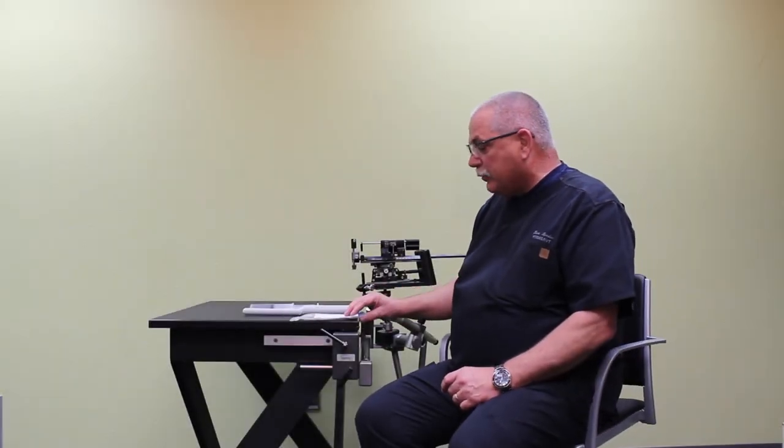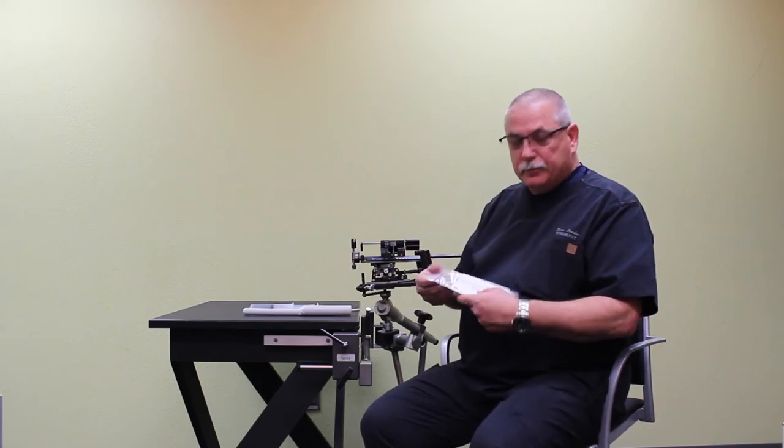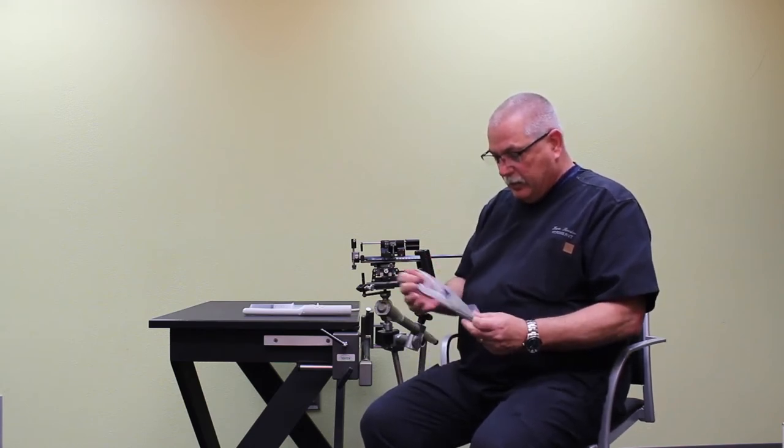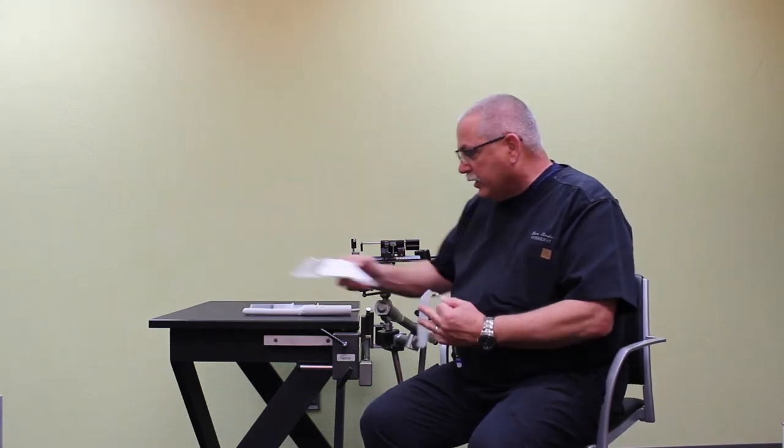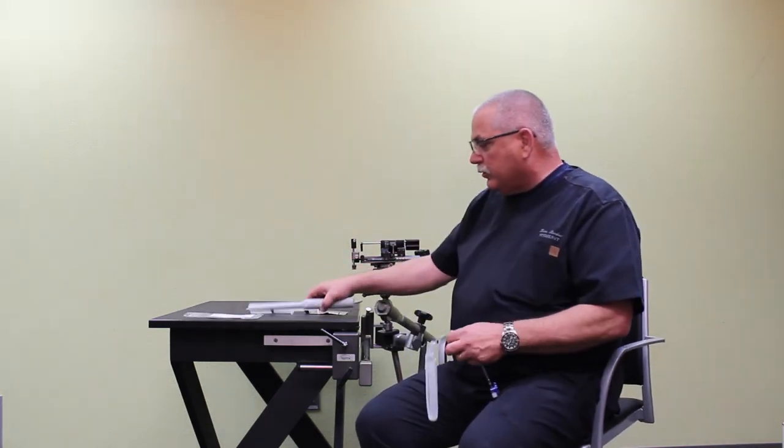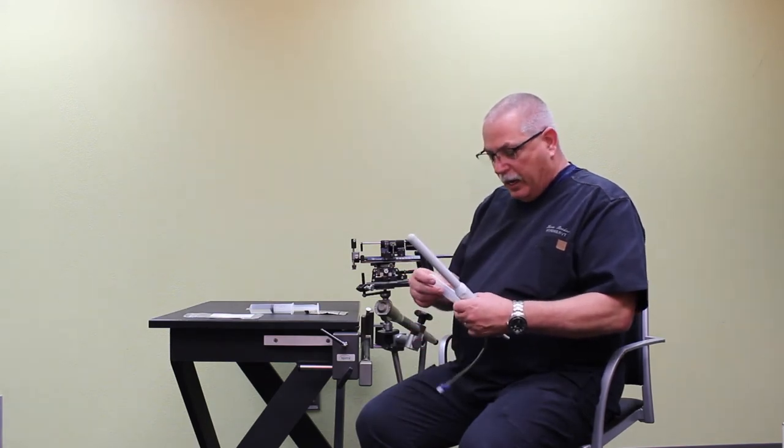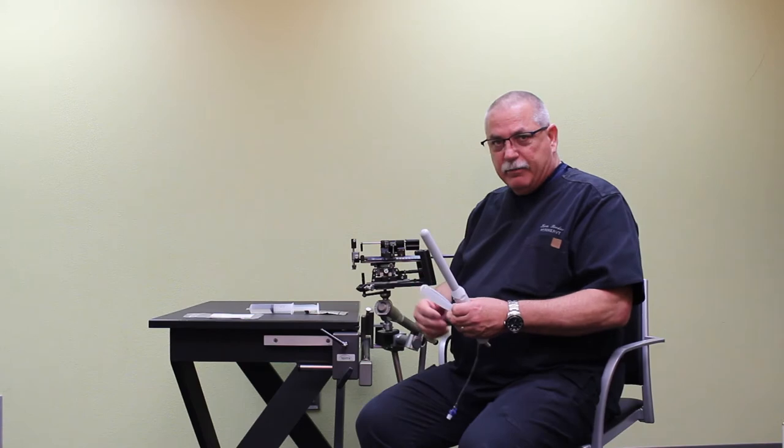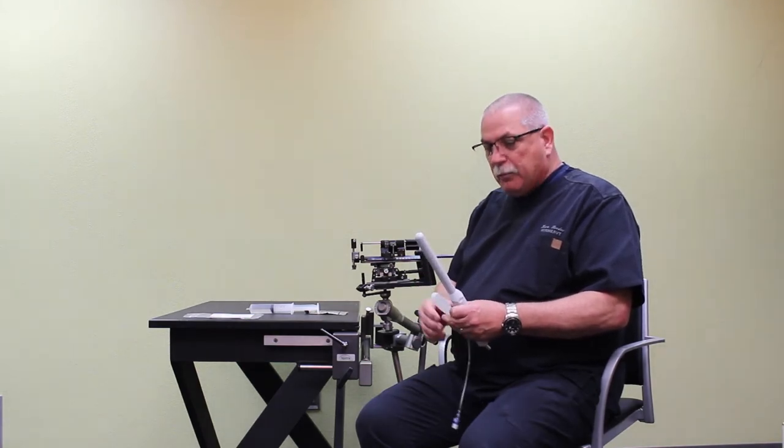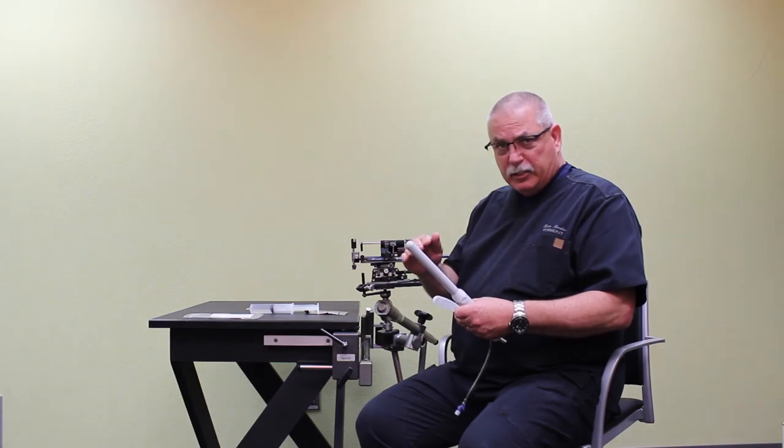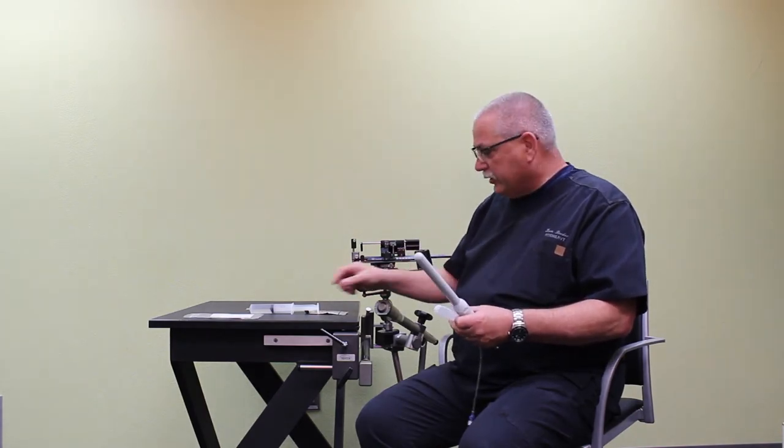Next, we'll place the endocavity balloon onto the probe itself. So we'll take the balloon out of its case. And it's important to note that the endocavity balloon, its main purpose is to position the prostate. Now with the fluid around the prostate during imaging, that may in fact improve the image, but the number one reason for using the endocavity balloon is to be able to position the prostate properly there on the ultrasound screen.